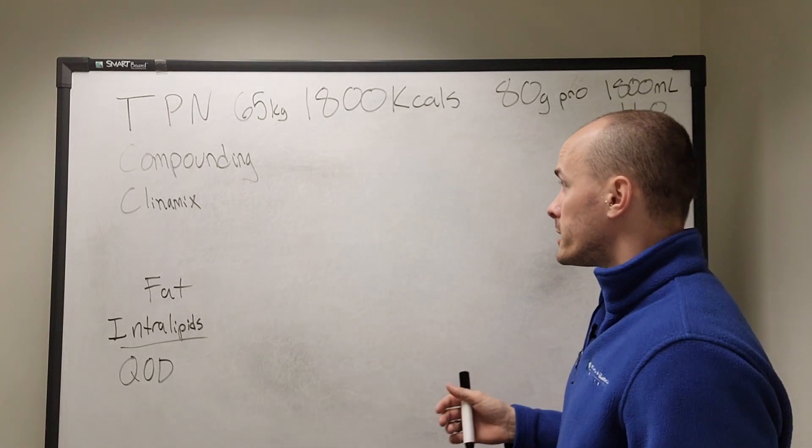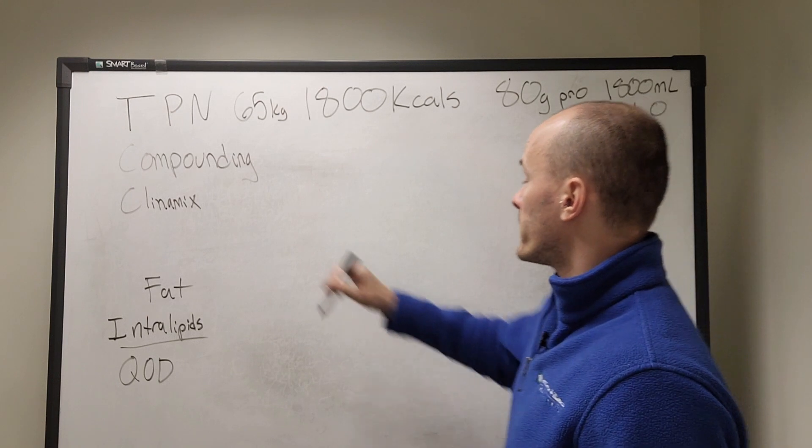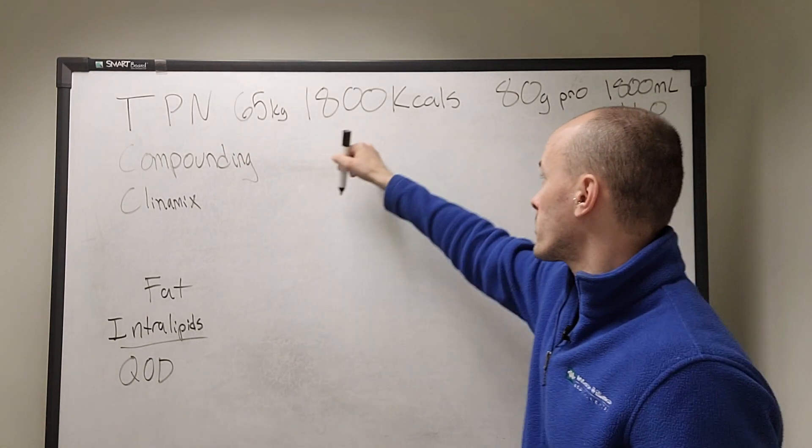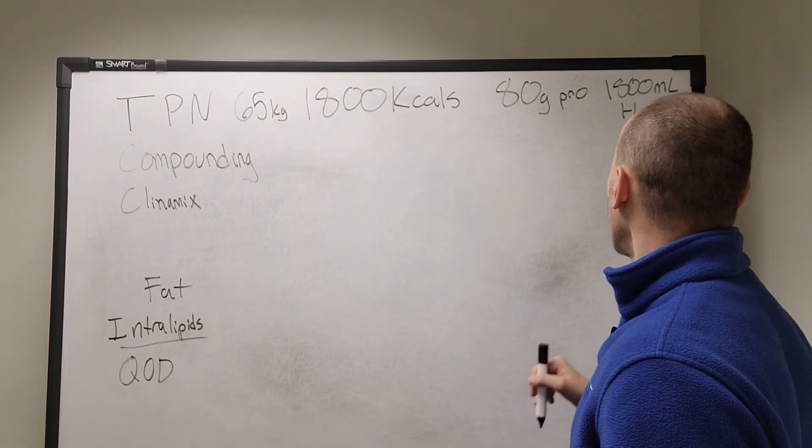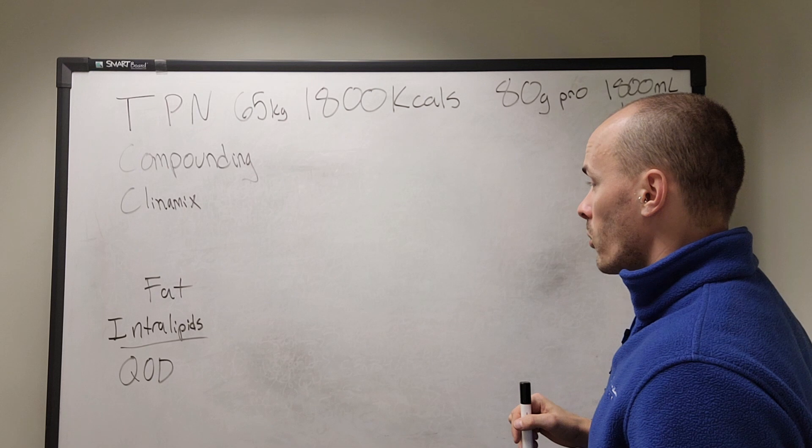So here is our hypothetical patient. They weigh 65 kilograms. They need 1800 calories, 80 grams of protein, and 1800 mils of water.